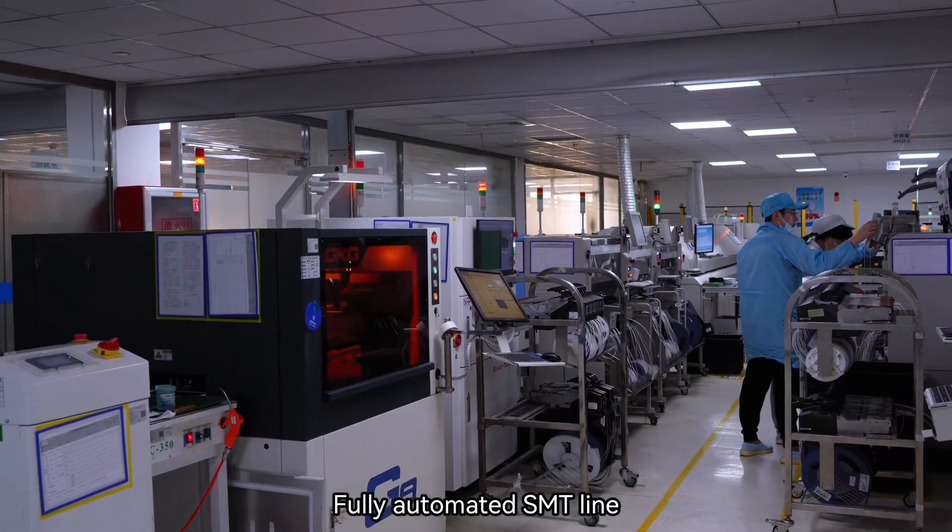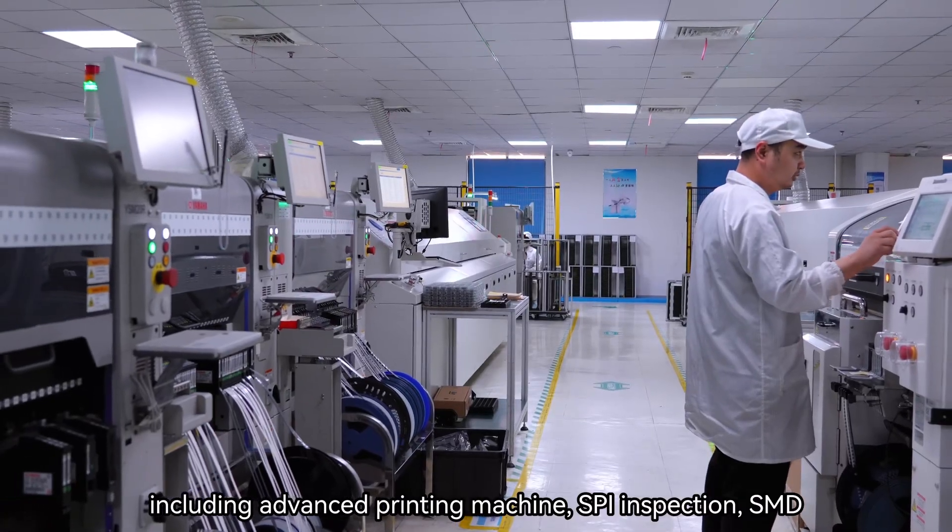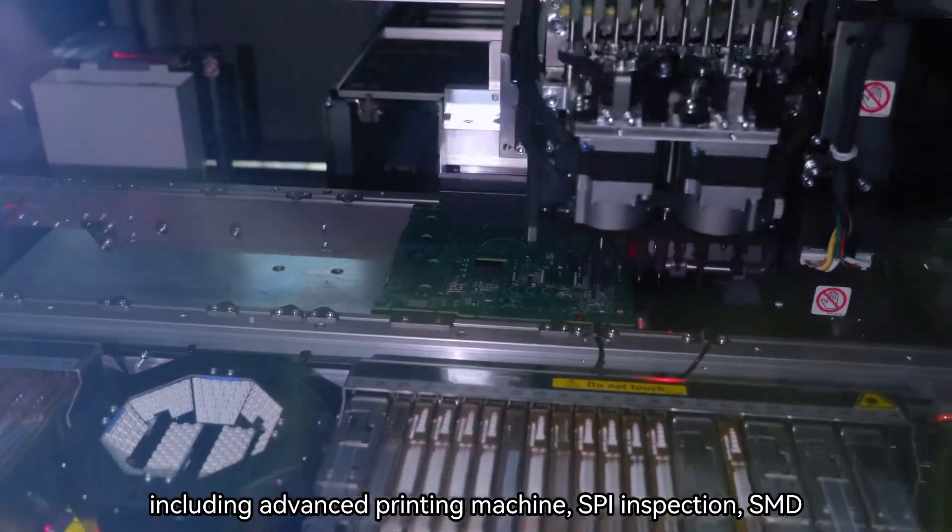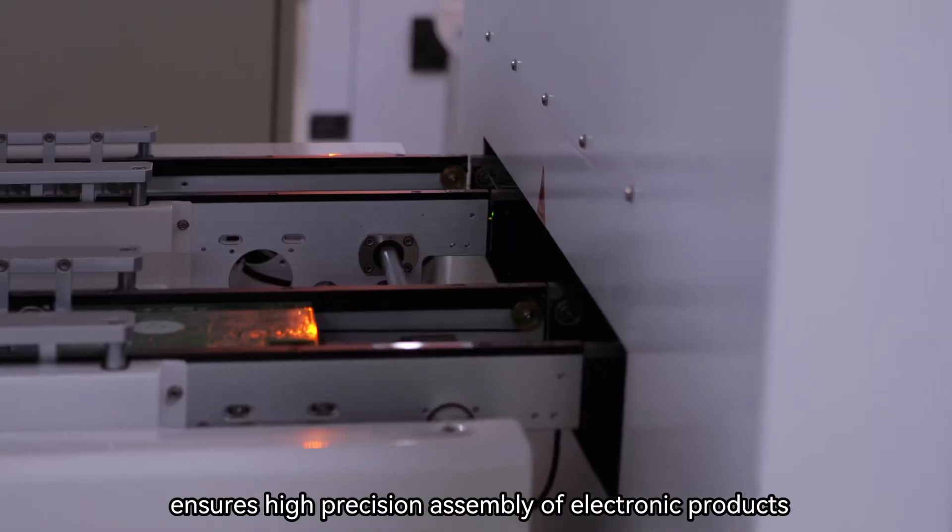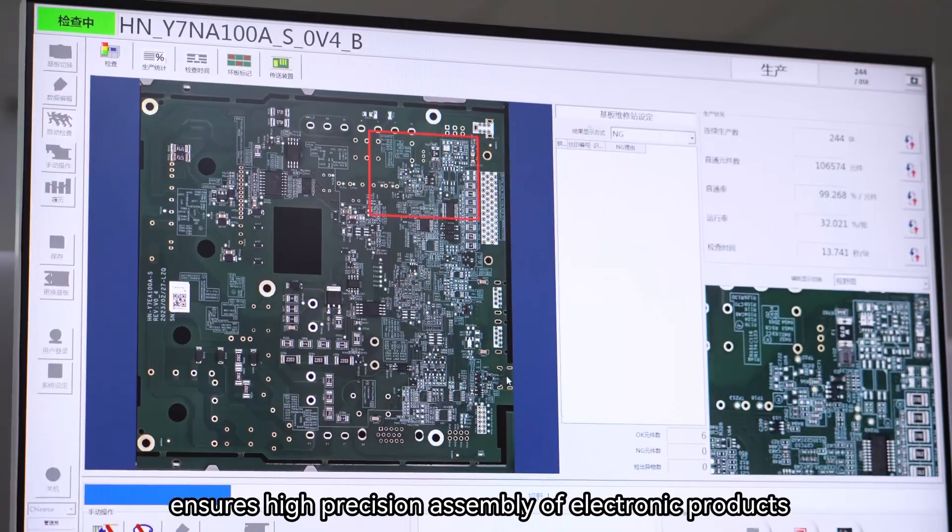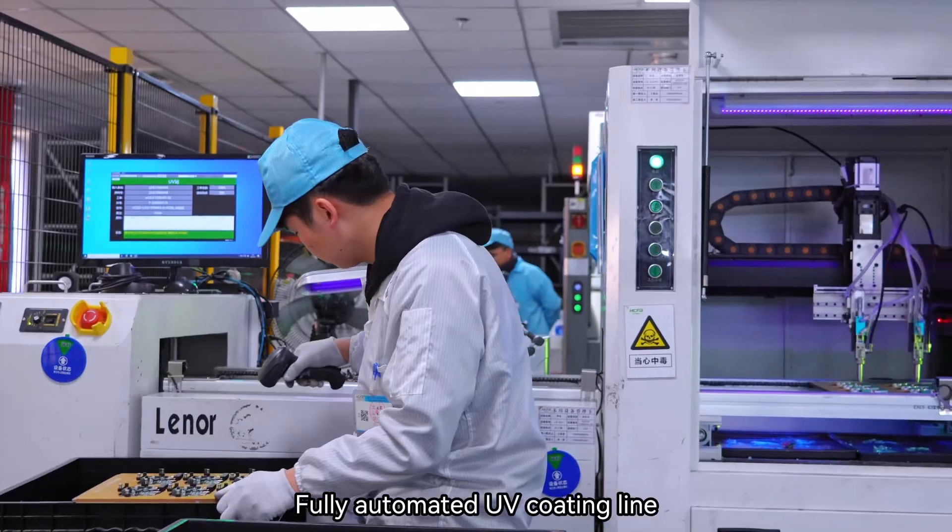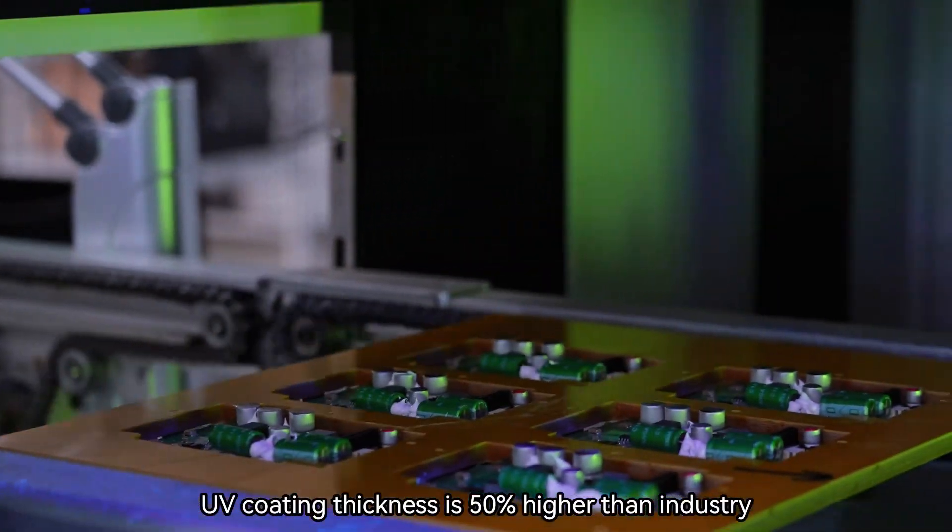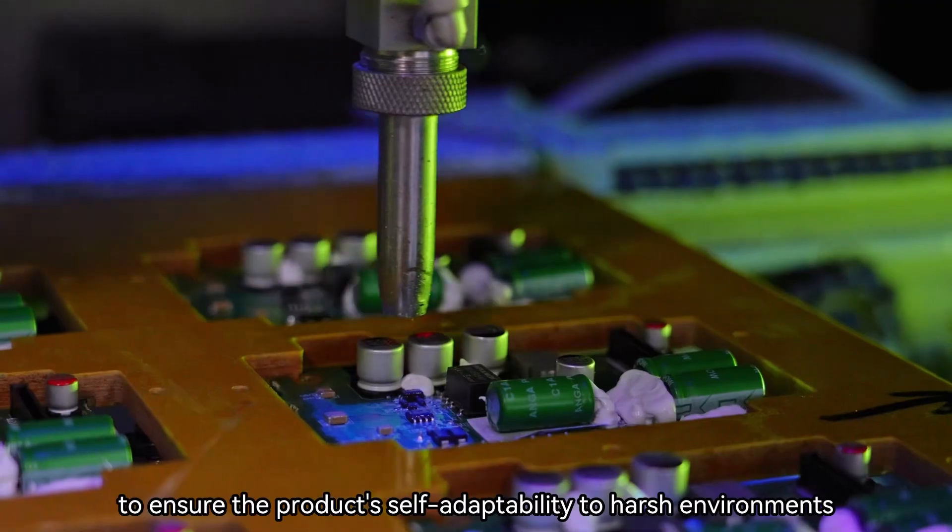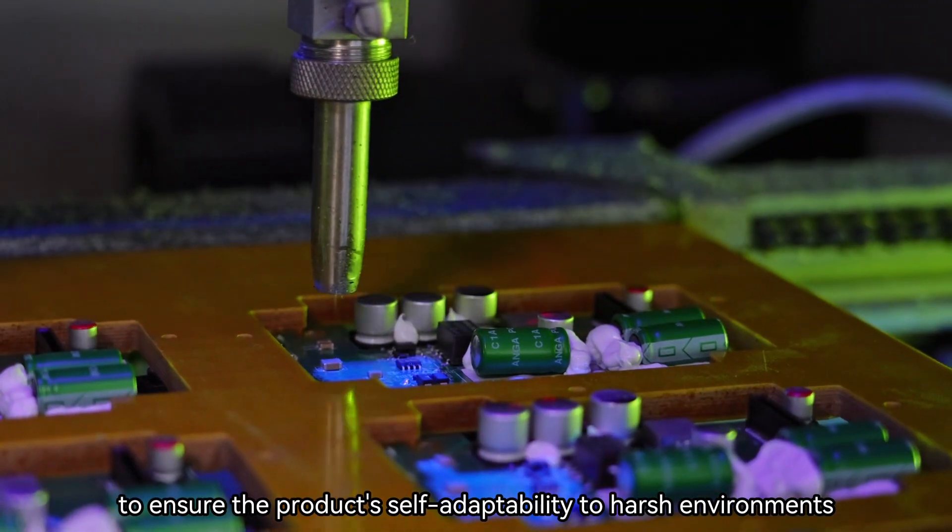Fully automated SMT line, including advanced printing machine, SPI inspection, SMD, 3D AOI, and X-ray technology ensures high precision assembly of electronic products. Fully automated UV coating line, UV coating thickness is 50% higher than industry to ensure the product's self-adaptability to harsh environments.